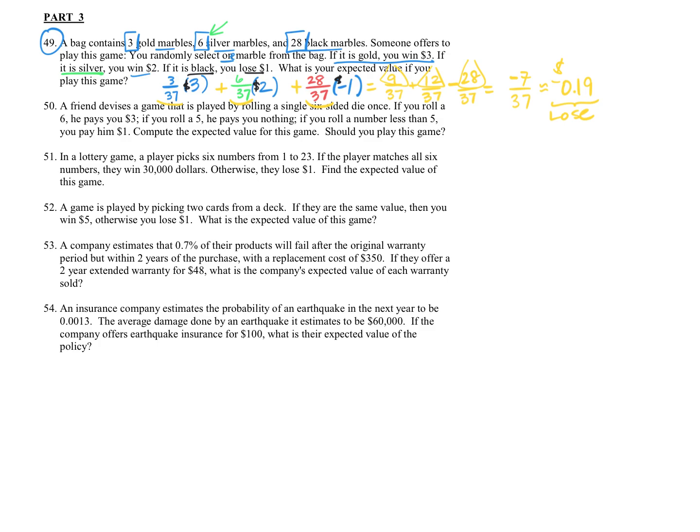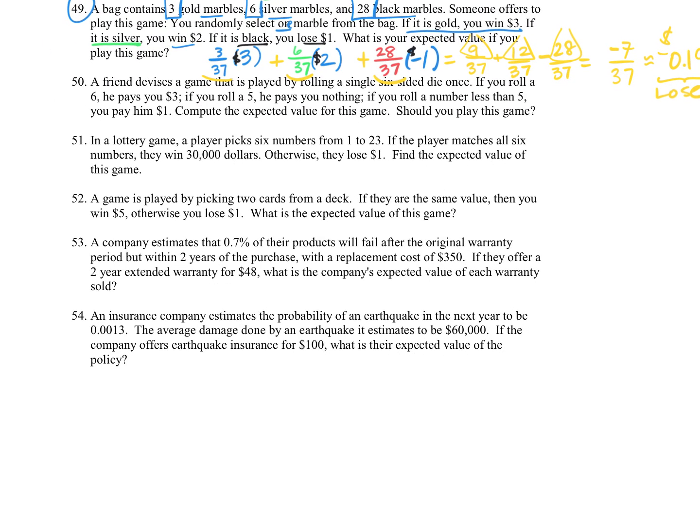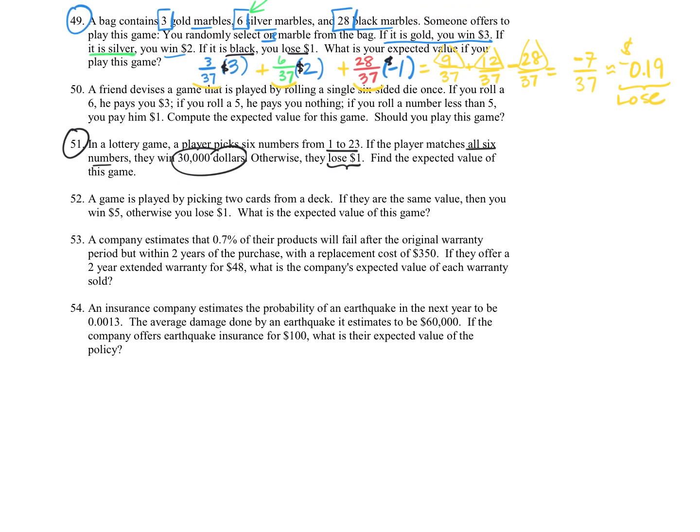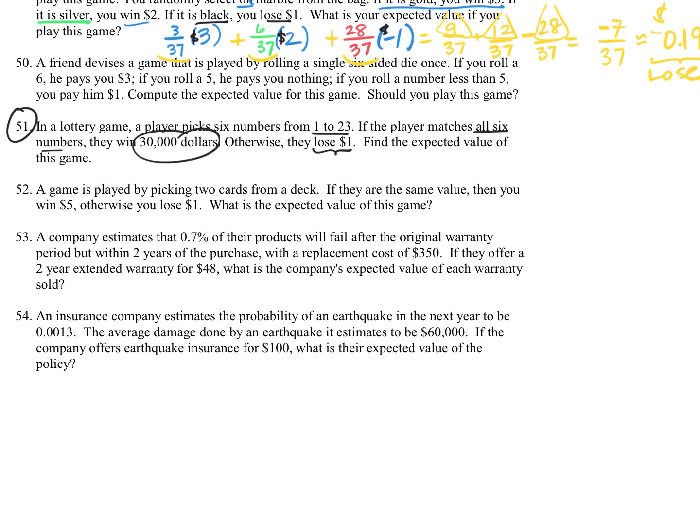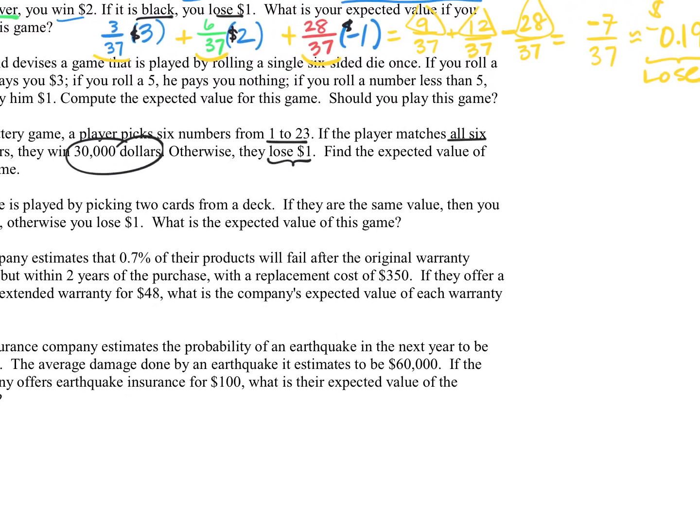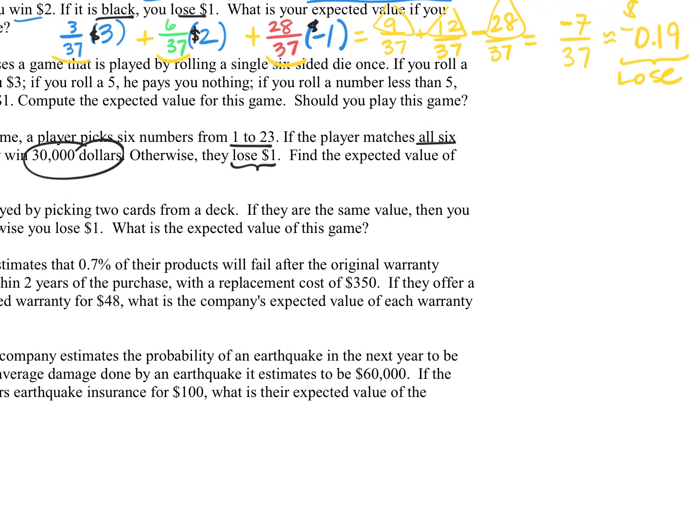Now if we're looking at question number 51, we have a lottery game where the player picks 6 numbers from 1 to 23. If the player matches all 6 of them, they win $30,000. Otherwise, they lose their $1. If there are 23 numbers to choose from and we only want to choose 6, this is going to be our sample space, and that's actually equal to 100,947.